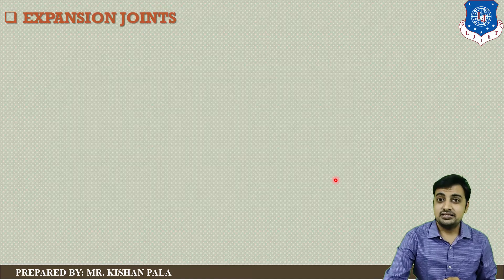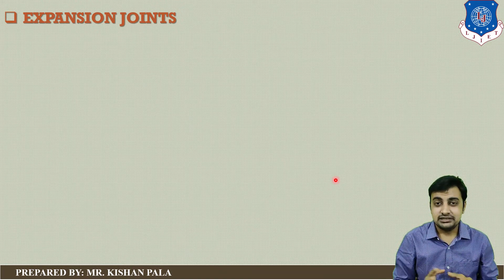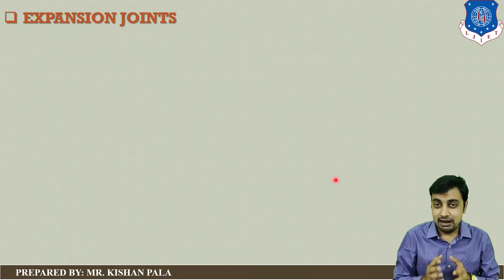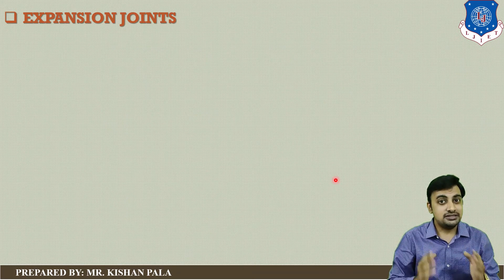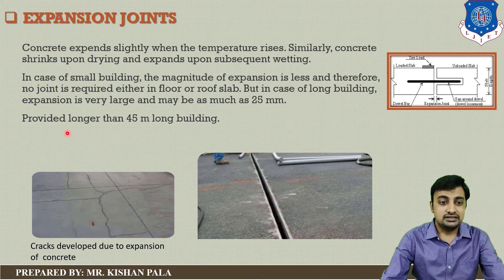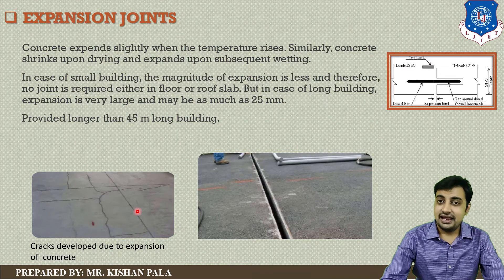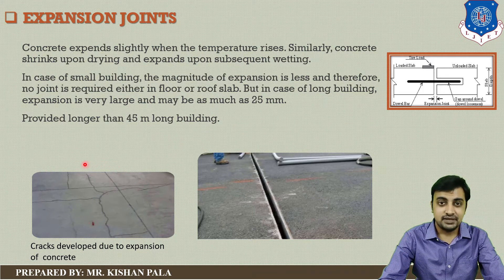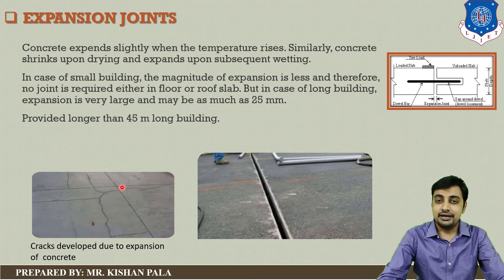Now let us discuss about expansion joints. With increasing temperature, concrete will expand; with decreasing temperature, concrete will shrink. When concrete expands due to rising temperature, stresses are generated and cracks develop. Concrete also expands upon subsequent wetting and shrinks upon drying. So we have to allow for movement of the concrete due to these temperature changes, which is the purpose of expansion joints.